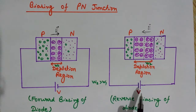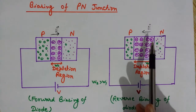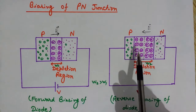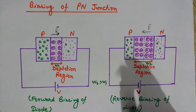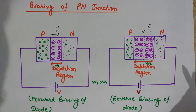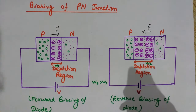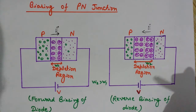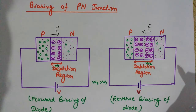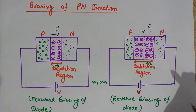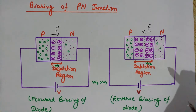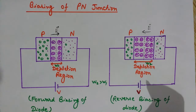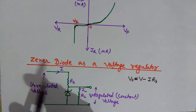If we keep increasing the voltage, at some stage it creates an electric field high enough to break the bonds of electrons. Electrons and holes are produced in large amounts, and this condition — where the structure of the atom breaks and electrons are released — is known as the breakdown of the diode. The breaking of electrons from their atoms or breaking of the lattice structure is known as zener breakdown.